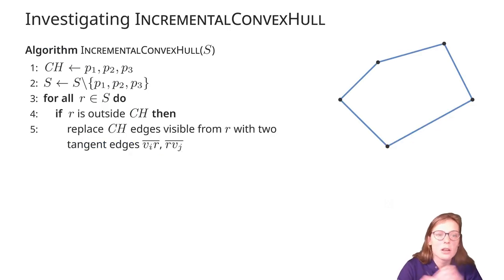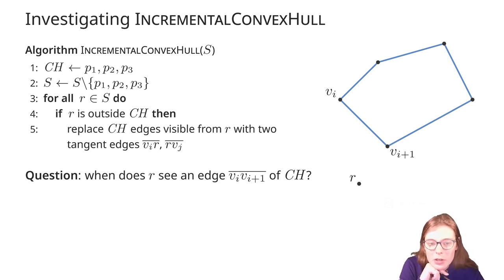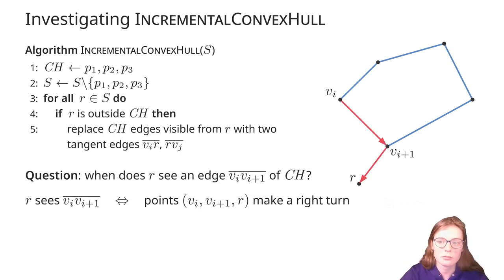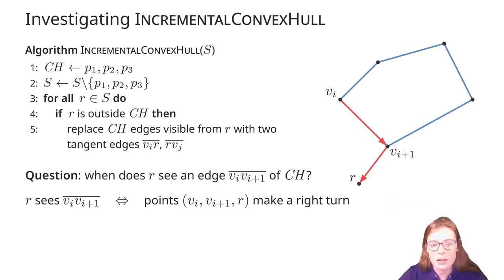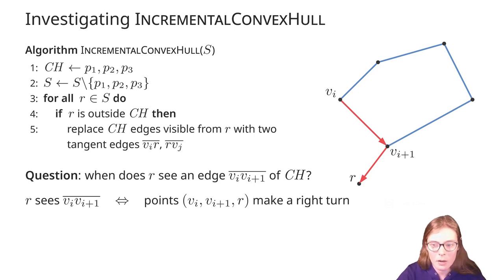Let's come back to the incremental convex hull algorithm and see what can go wrong in practice. First, let's consider the following question: what does it mean that a point R sees some edge b_i, b_{i+1} of the convex hull? Well, if the direction of the edge b_i, b_{i+1} is in the counterclockwise order of traversing the convex hull boundary, then if the three points b_i, b_{i+1}, and R make a right turn, then we can say that R sees the edge.